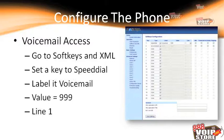If we want one-button access to voicemail — since some Astro phones don't have a dedicated voicemail button — we need to create one using the soft keys. Go to Soft Keys and XML Settings, set a key to Speed Dial, label it Voicemail, and set the value to 999, which is the extension of the voicemail system. Set it for Line 1 so it'll be the first soft key that appears.